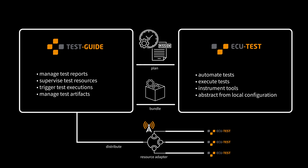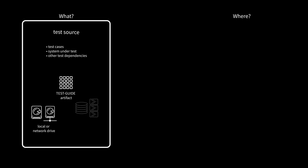There are two things we need to describe for our test executions: what do we want to execute, and where do we want to execute it? What we want to execute is a test source and can include test cases, the system under test, and other test dependencies. This source could be, for example, an ECU Test workspace. It can exist on a local drive or network drive, as an artifact uploaded to the Test Guide artifact management, or versioned in a source code management system, such as Git or Subversion.